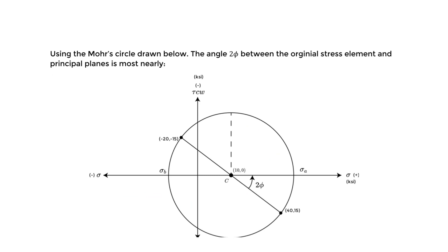So now let's solve for the 2φ angle, or you might have seen this as 2θ_p, that we have to rotate in order to reach the principal planes. And what occurs at the principal planes? We know we have the maximum stresses, the major and minor principal stresses. So we have to rotate this 2φ or 2θ_p angle. So in this example we will denote it as 2φ. So using the Mohr circle drawn, the angle 2φ between the original stress element and the principal planes is most nearly what?